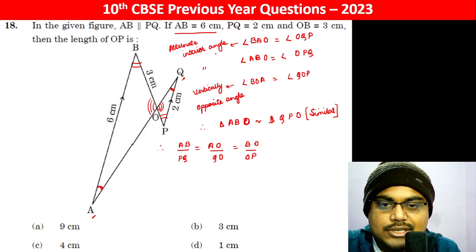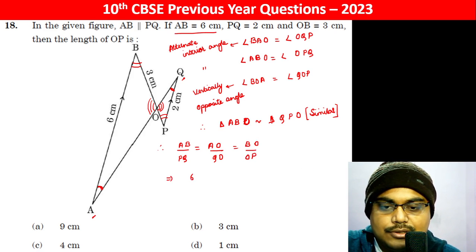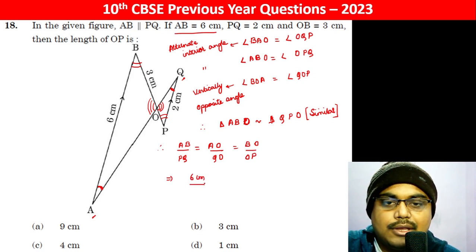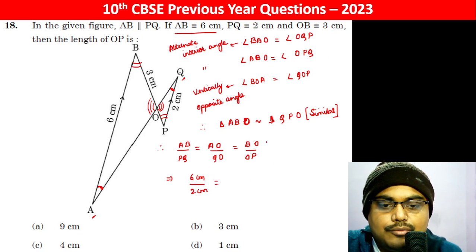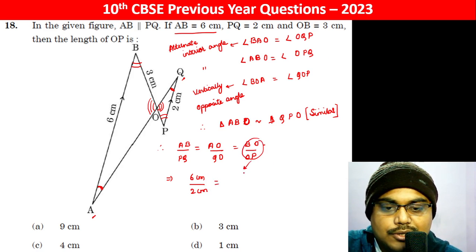अब AB जो है 6 cm है. 6 cm divided by PQ which is 2 cm. OB, यहां यहां पर यह वाला रिश्या हम लोग लिख रहा है. OB is 3 cm.